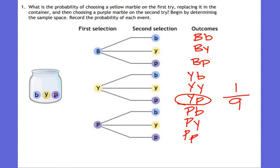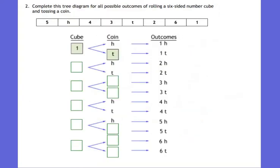Let's take a look at number two. Complete the tree diagram for all possible outcomes of rolling a six-sided number cube and then tossing a coin. A six-sided number cube — what are all the possible sides it could land on? One, two, three, four, five, and six. Those are all the possible sides.